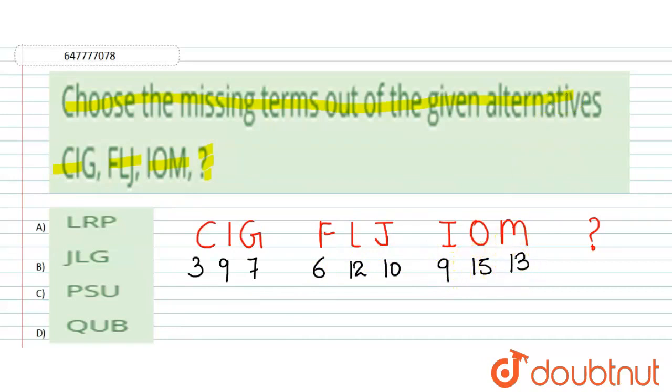तो यहाँ पर आपका एक logic देखने को मिलेगा। 3 plus 3 equals to 6, then 6 plus 3 equals to 9, then 9 plus 3 will be equals to 12. So 12 होता है L के लिए, 12 is for L.